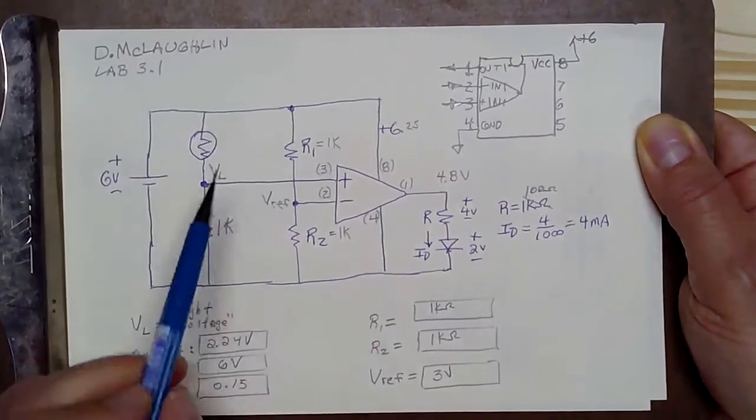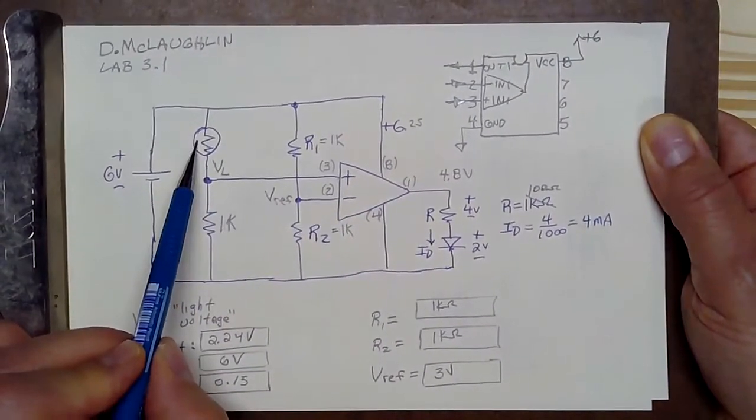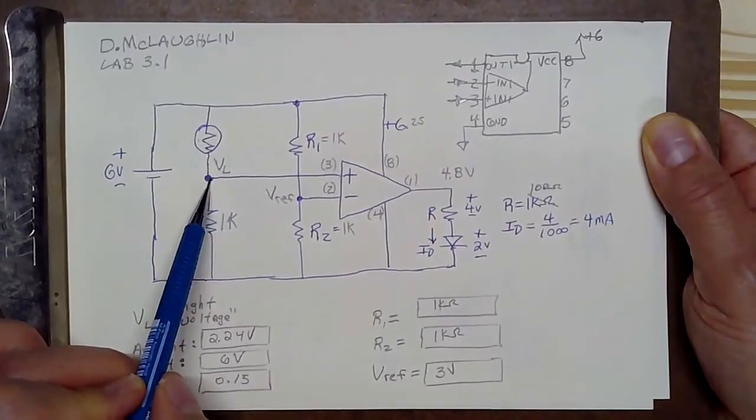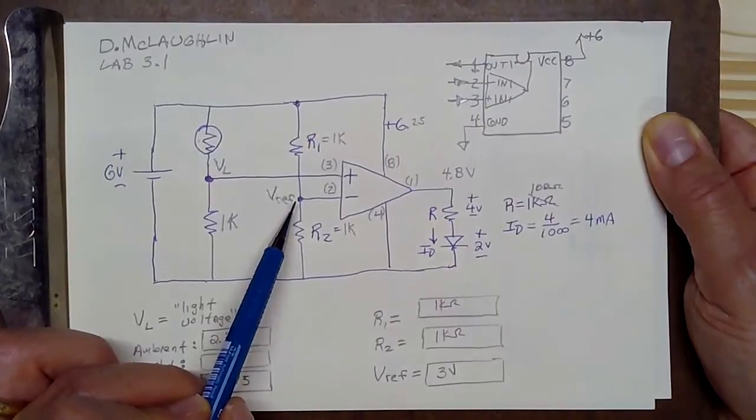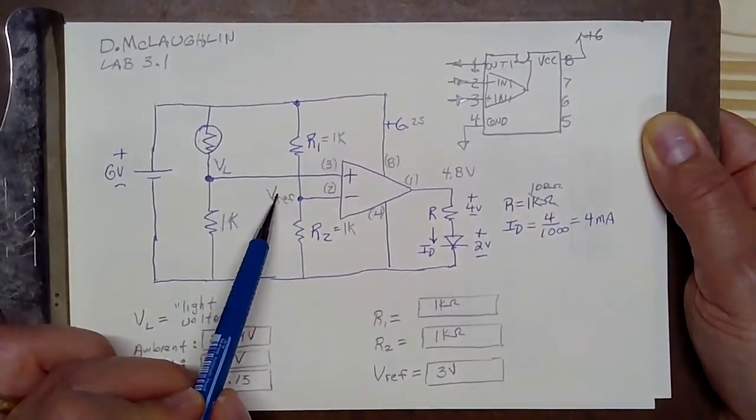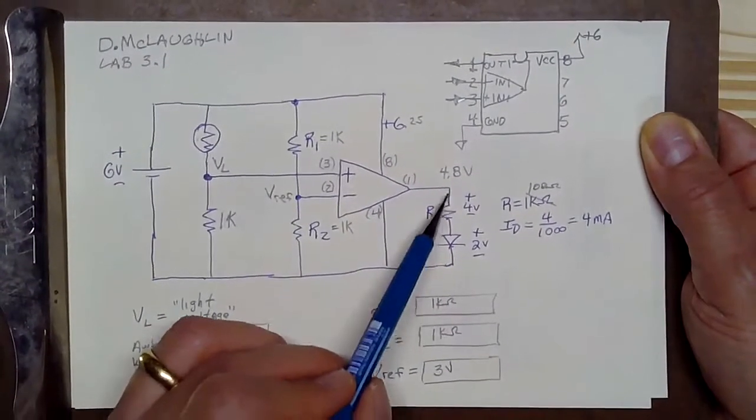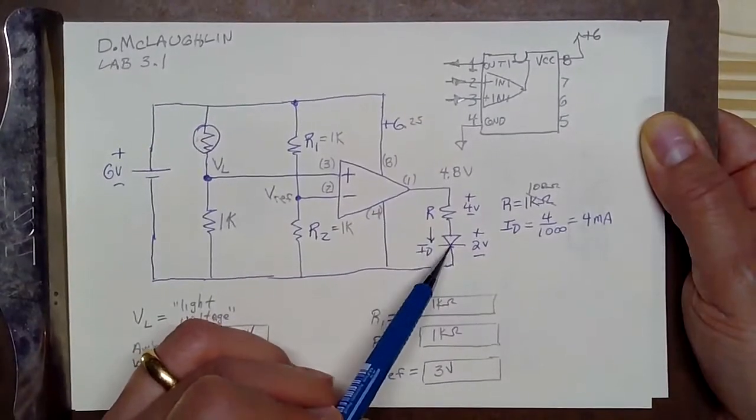Recall that circuit when we shine bright light on the CDS cell, VL went high, it went above 3 volts. We had a reference value of 3 volts, and so when VL exceeded 3 volts, the op amp went high and the LED would glow.